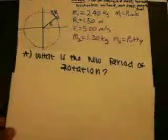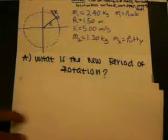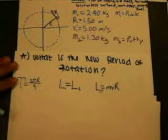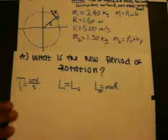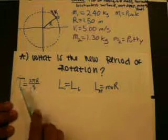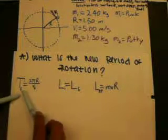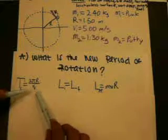Question A asks what is the new period of rotation after the collision. We can find the new period by simply using the formula for the period, which is just 2π times the radius all over velocity.